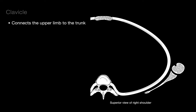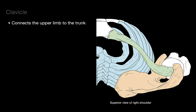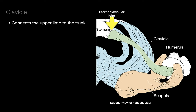The clavicle connects the upper limb to the trunk. Here's a cross-section of the right shoulder joint — there is the humerus, which articulates with the scapula. In a superior view of the right shoulder, the humerus and its associated arm, forearm, and hand articulate with the scapula; the scapula articulates with the clavicle; and the clavicle articulates with the sternum at the sternoclavicular joint. That is the only bony attachment for the upper limb — all other attachments involve muscles, like the trapezius.